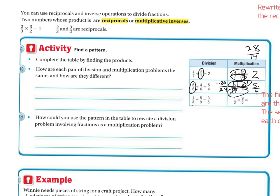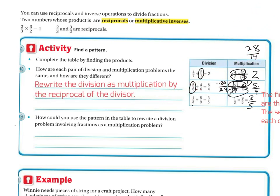Again, we're going to do the same thing. One third divided by five ninths is the same thing as one third times nine over five. You're still going to get three fifths. So how are each pair of division and multiplication the same, and how are they different? Well, if you rewrite the division as a multiplication by the reciprocal of the divisor, you're going to get the same answer.